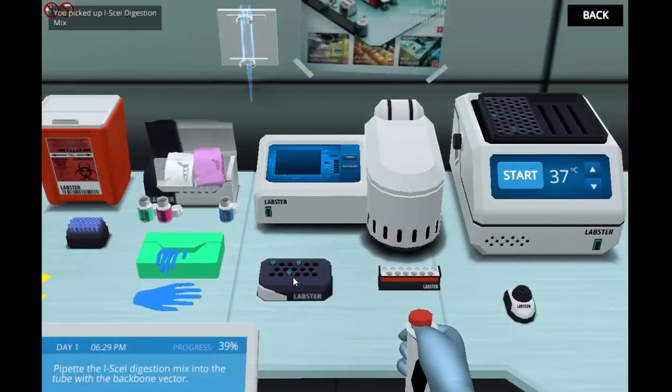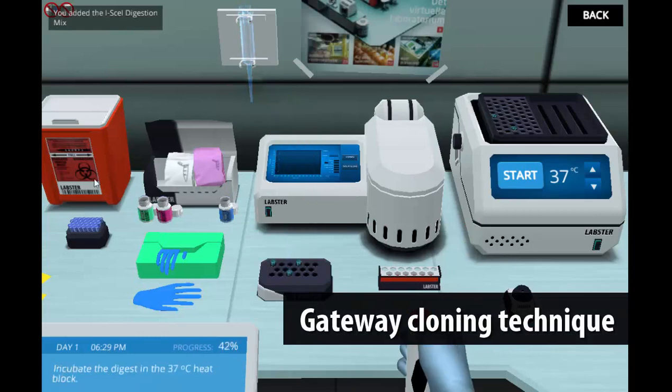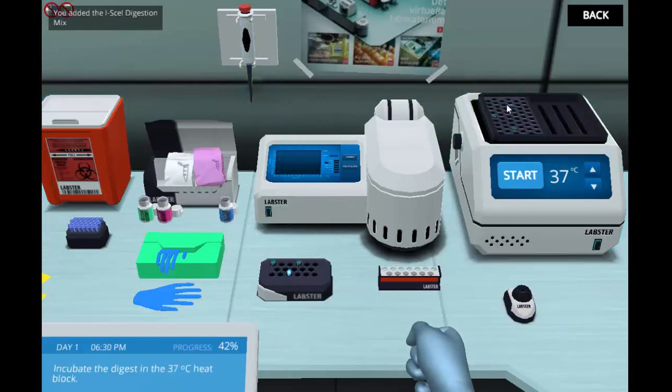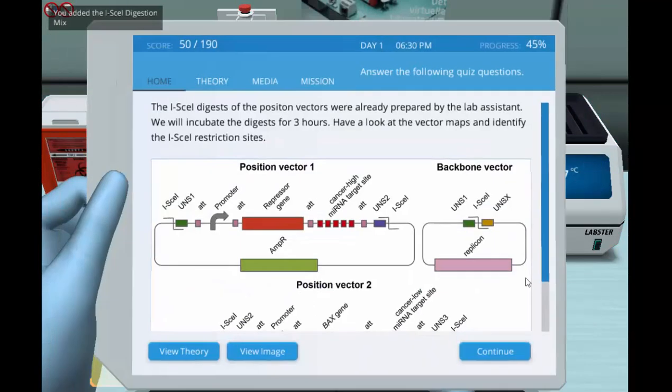The circuit parts are combined with the gateway cloning technique to produce position vectors that will guide the insertion of the circuit parts into the final circuit.